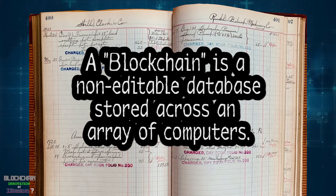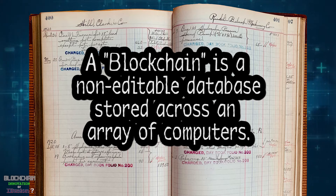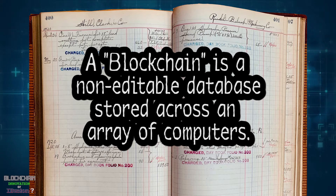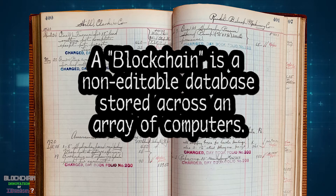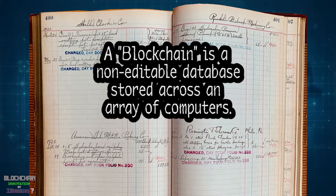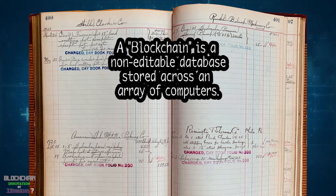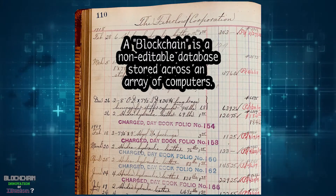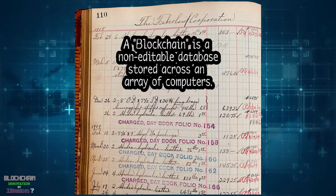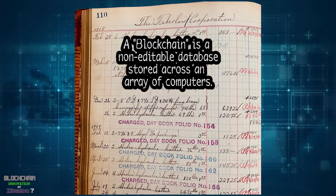I'm oversimplifying things a bit. Different blockchains have extra features — like Ethereum's smart contracts, which I'll go into later — but let's start with the basics. The main function of blockchain is simply as a database, a ledger, a record.